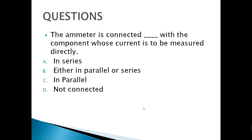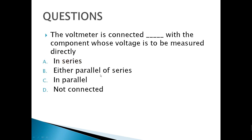The ammeter is connected blank with the component whose current is to be measured directly — of course it should be in series. The voltmeter is connected blank with the component whose voltage is to be measured directly — of course it should be in parallel.